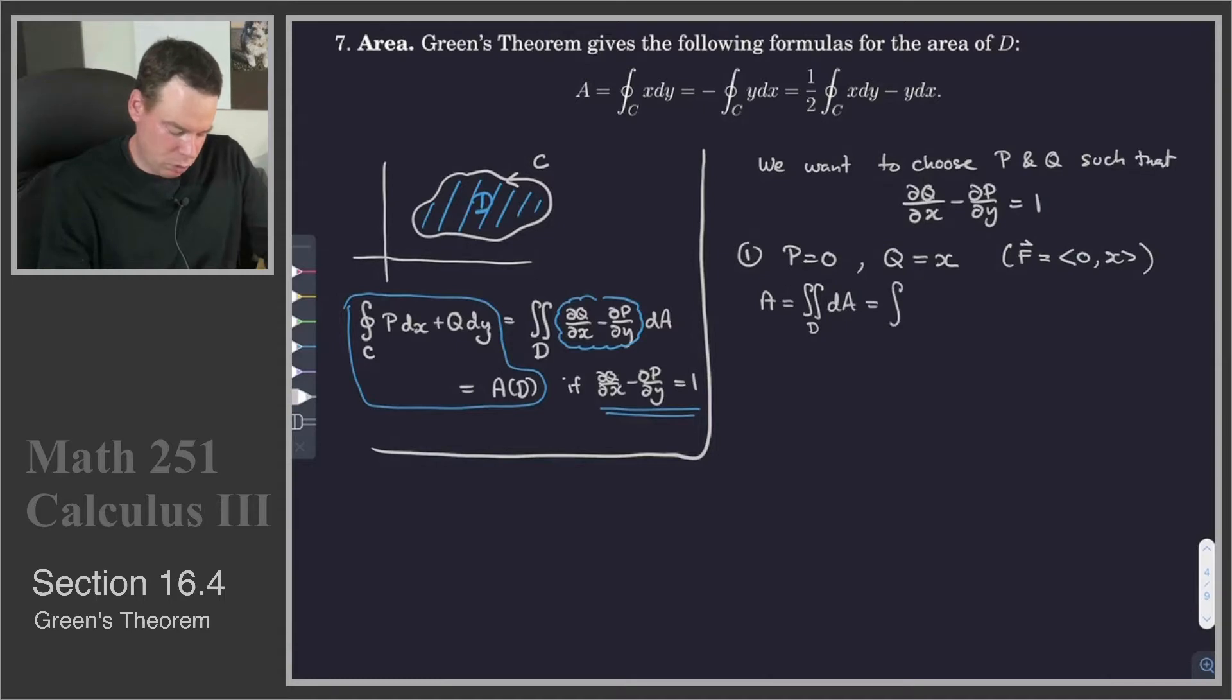But for these choices of P and Q, dQ/dx minus dP/dy is just 1. So we get this equality.